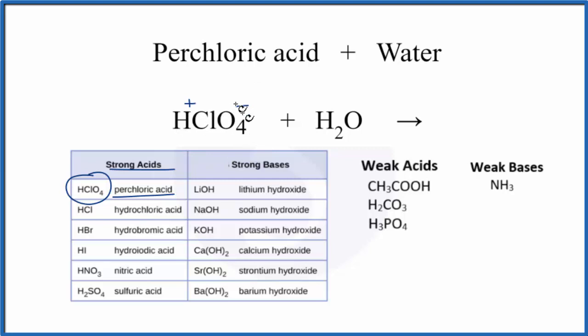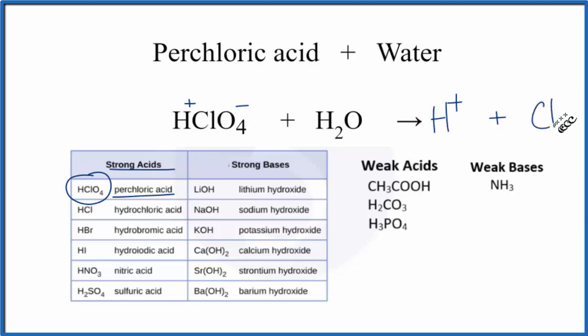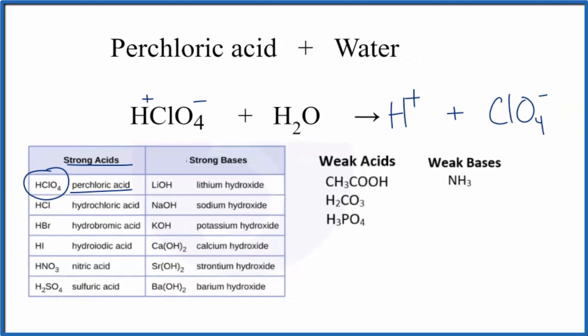So now we put it in water and split it apart into its ions. We'll get H+ plus that perchlorate ion ClO4-. This H+ is going to be aqueous—it's going to be dissolved in water—so will the perchlorate ion.